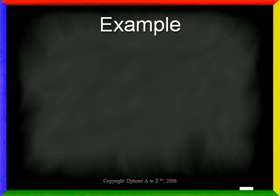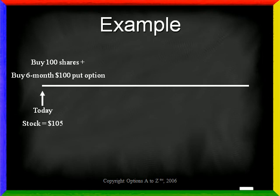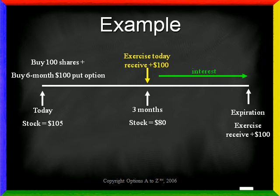For example, assume today the stock is $105 and you purchase 100 shares plus a 6-month $100 put. Three months later, the stock is trading for $80, and you believe it will not rise above the $100 strike before expiration. If you feel that it will stay below $100, you have two choices. First, you can wait until expiration, exercise it, and collect your $100 strike at that time. However, you could also elect to exercise it early and collect your $100 today, which will earn interest for three months. If the interest is greater than the put's time value, it may make sense to exercise the put early.